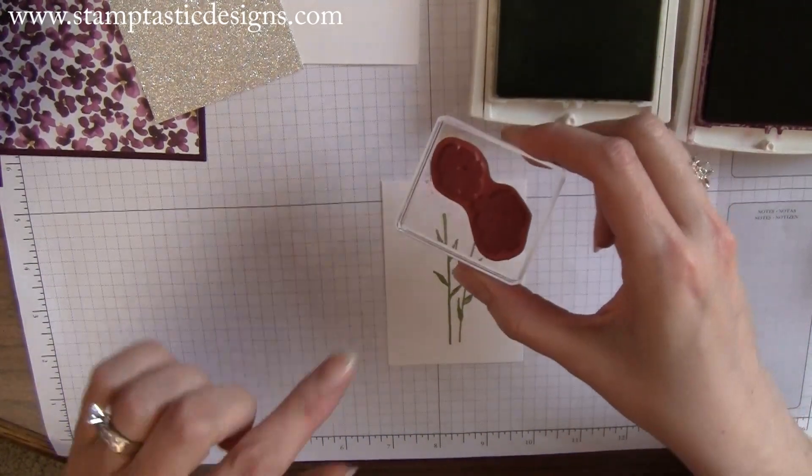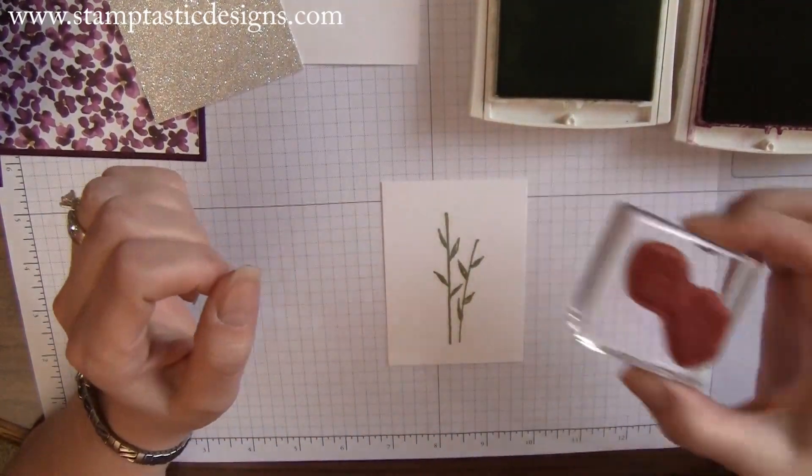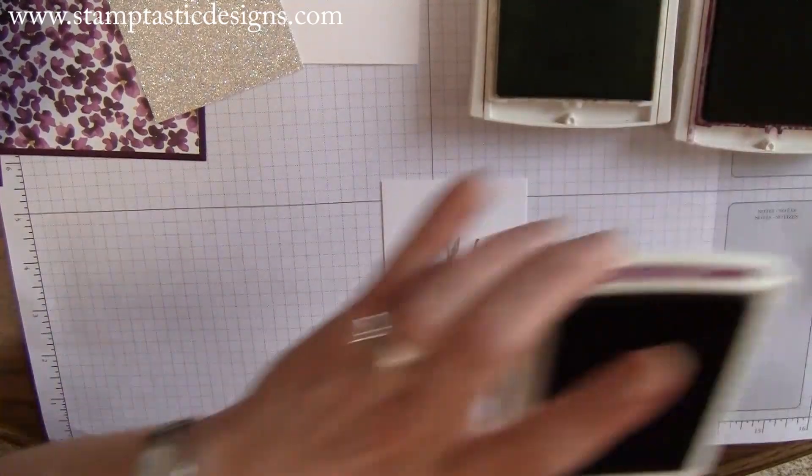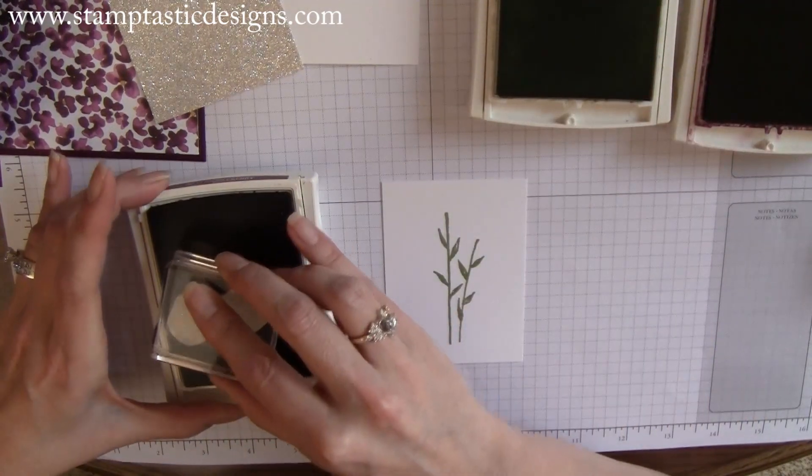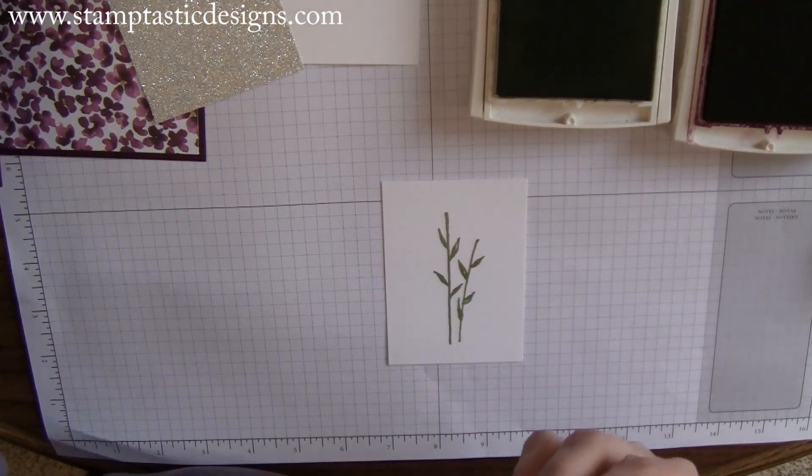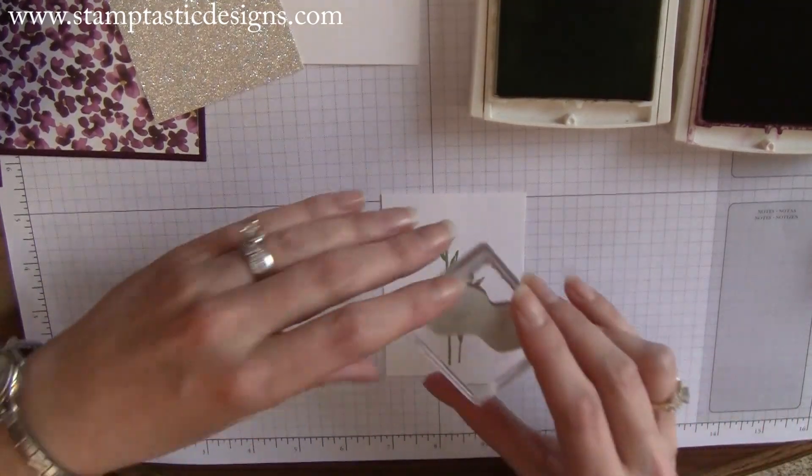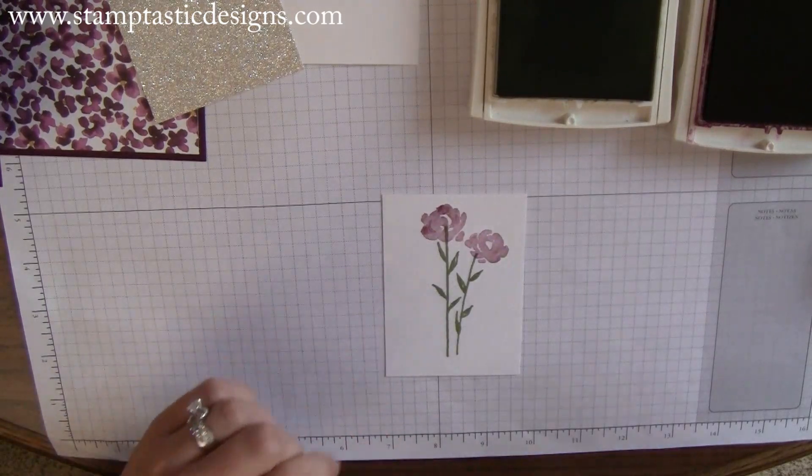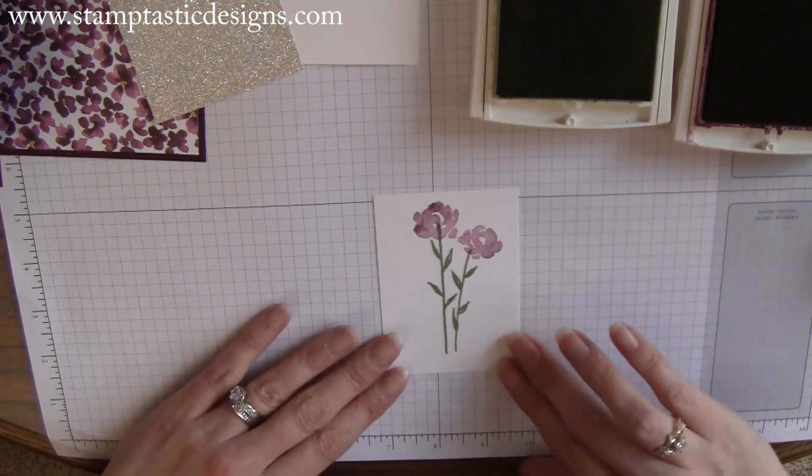Then I'm going to take some of the blooms from the set. For the blooms I'm using Rich Razzleberry because it's a shade lighter than the Blackberry Bliss. I'm going to stamp that on top of my leaves.